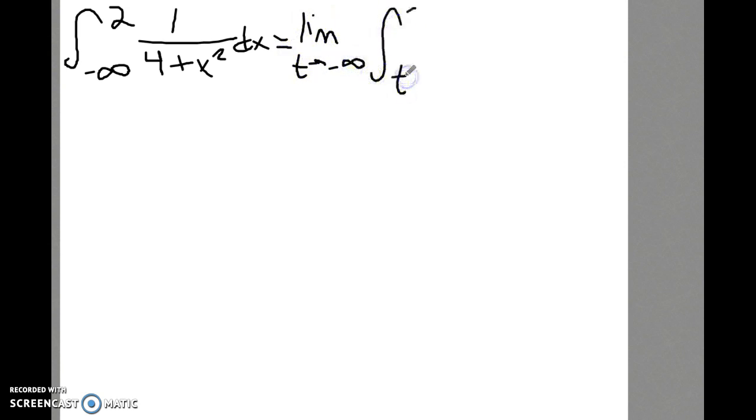I'm going to rewrite from the beginning. The integral from negative infinity to 2 of 1 over 4 plus x squared. Next order of business is to find the antiderivative of this integrand here.